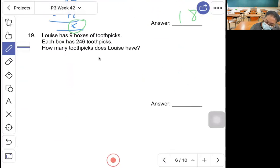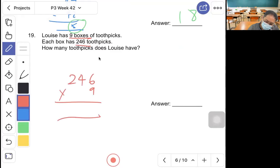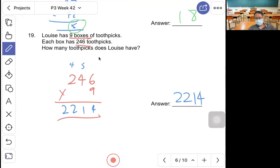Question 19, Louise has 9 boxes of toothpicks. Each box has 246 toothpicks. How many toothpicks does Louise have? 246 times 9 equals 2,214.